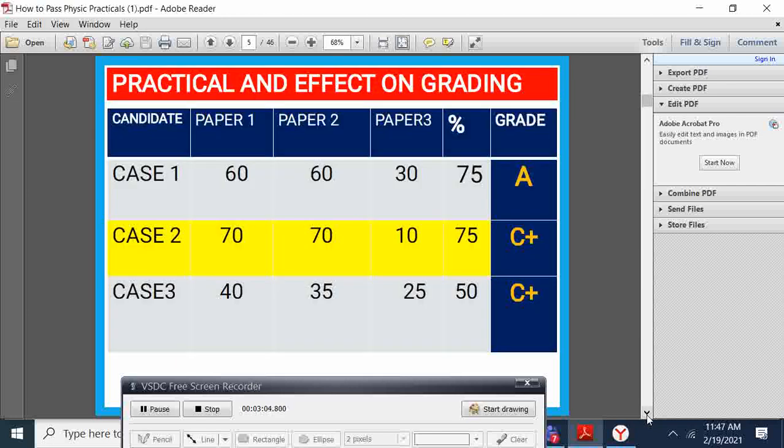Let me expound on the meaning. Let's say we have students here. I have three cases. Case 1, the student gets 60 in paper 1, 60 in paper 2, and 30 in paper 3, totaling to 150. When you divide by 2, the student gets 75, which is an A plain.